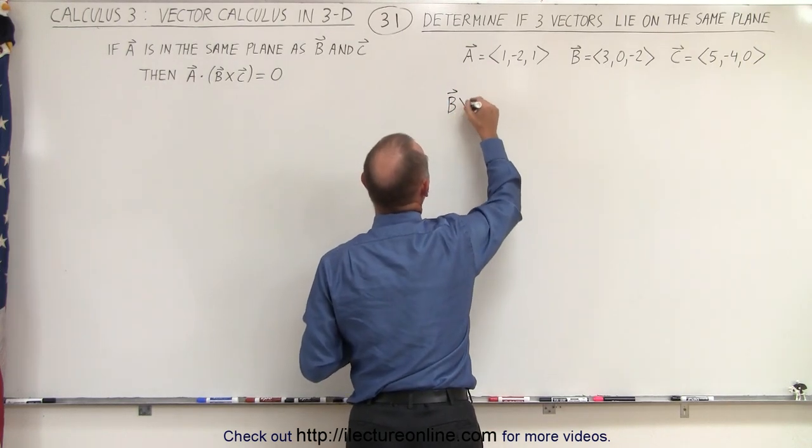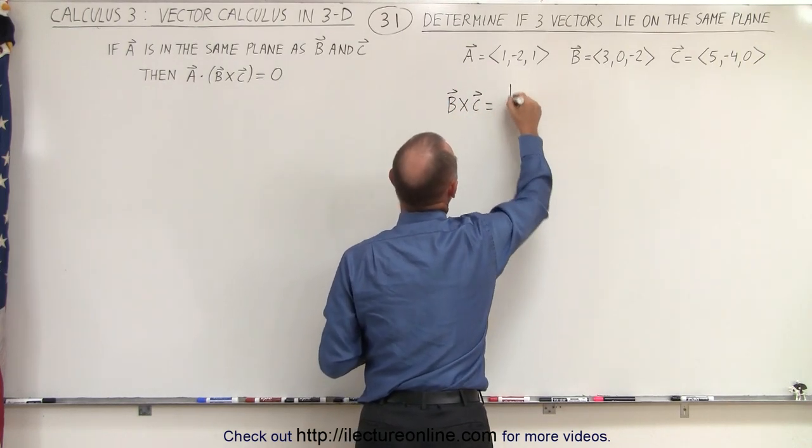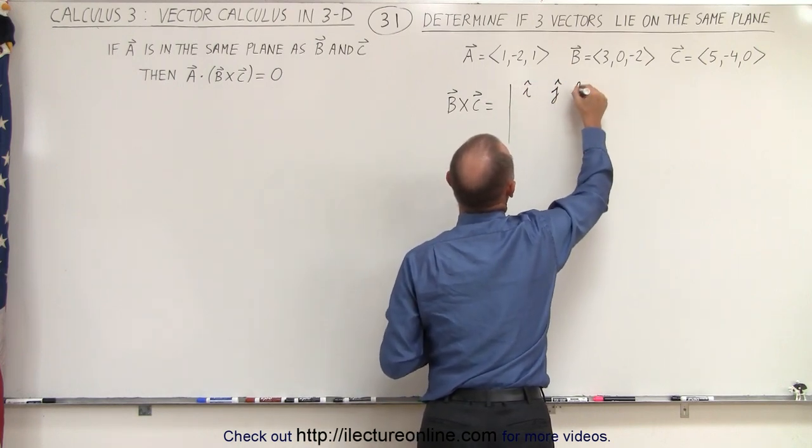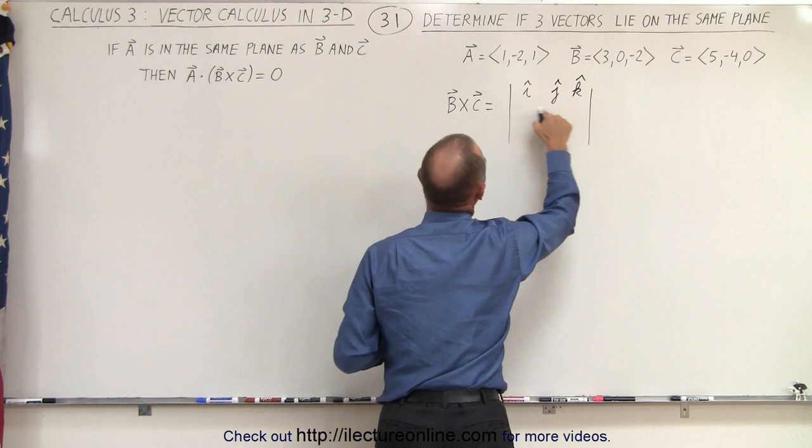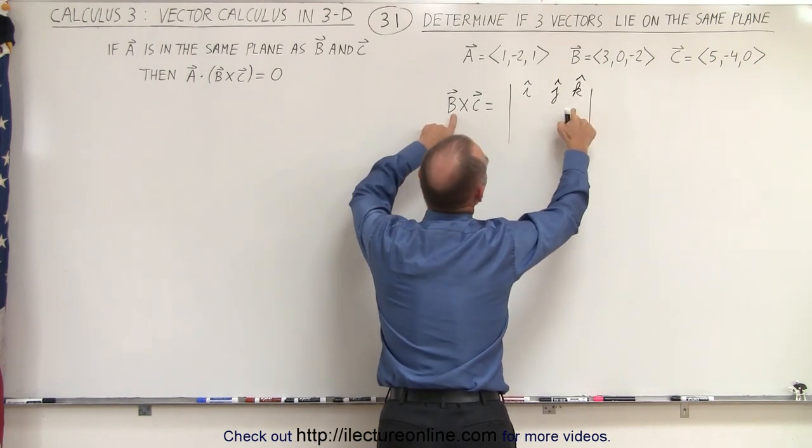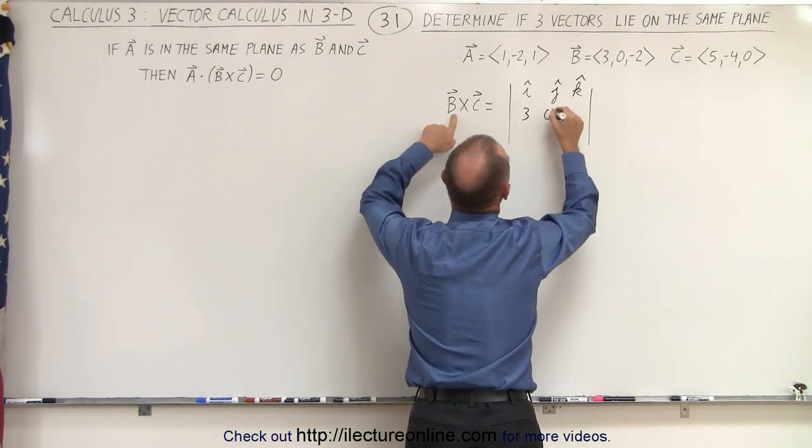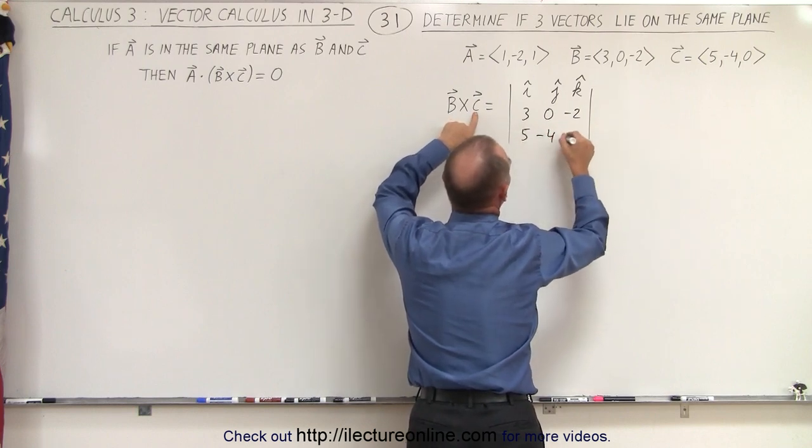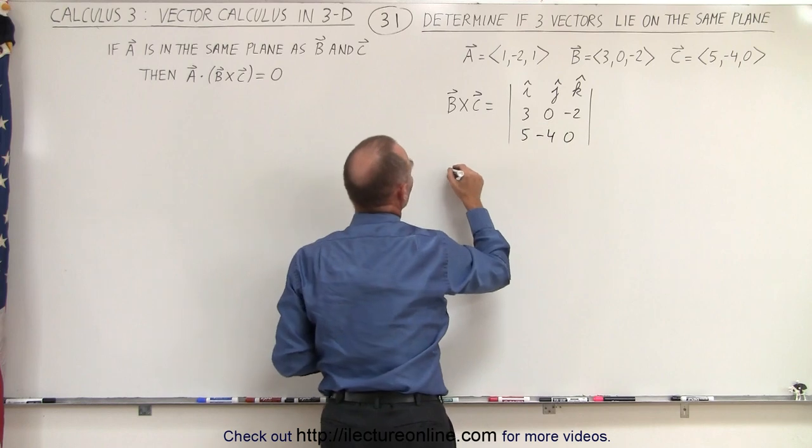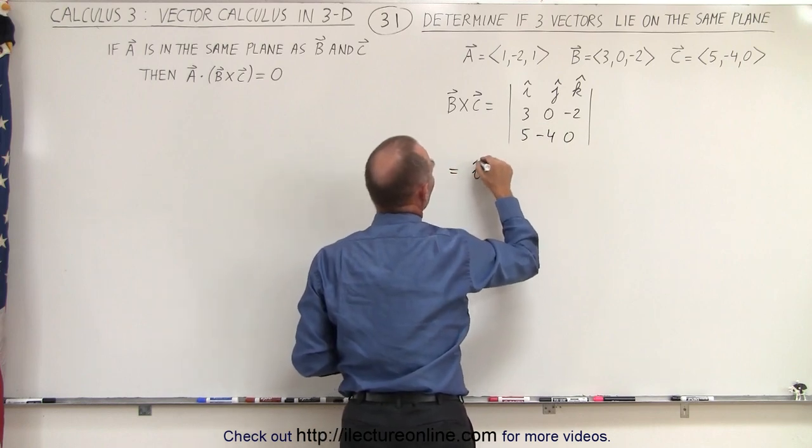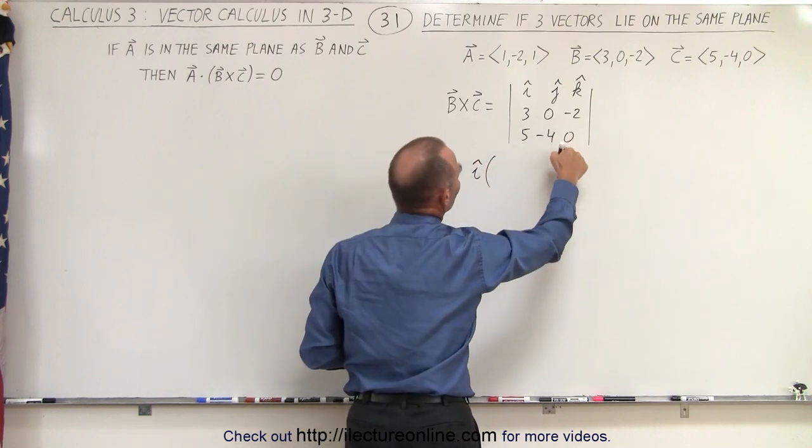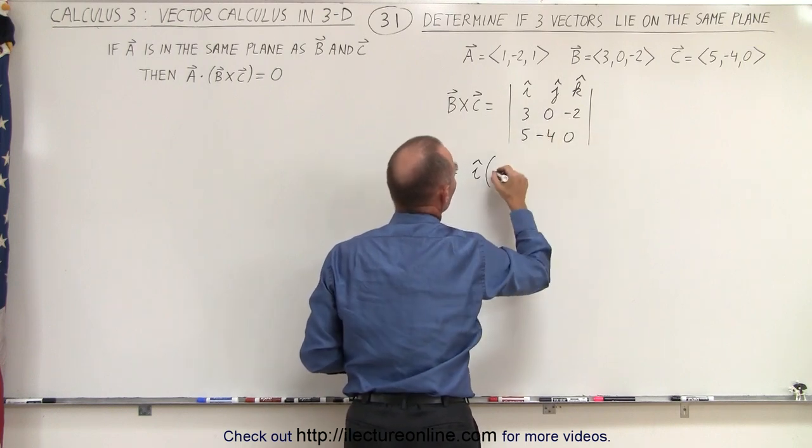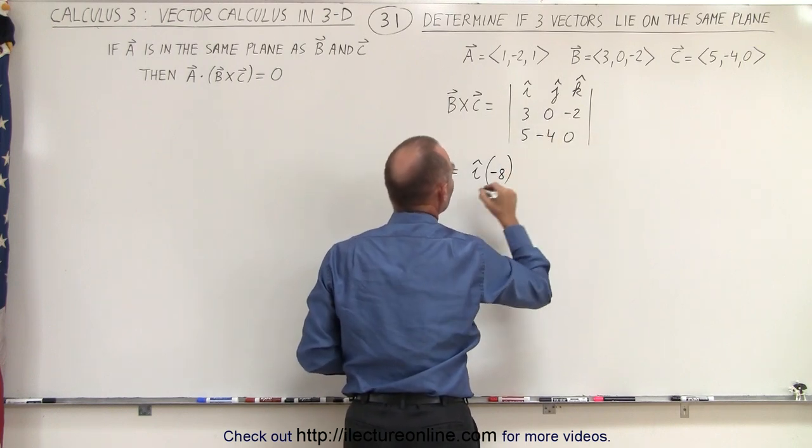So let's go ahead and do B cross C and see what we get. So B cross C is equal to the determinant of I, J, and K. The components of the first vector, which is B, that would be 3, 0, negative 2, and the components of C, which is 5, negative 4, and 0. So this becomes equal to I times 0 times 0 minus negative 2 times negative 4. That's a positive 8. Multiply it by negative is a negative 8.